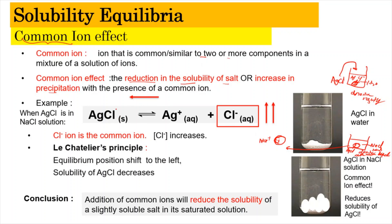As a result, the solubility of AgCl decreases — it becomes difficult to dissolve into ions, and the direction of equilibrium shifts to the left, increasing the precipitation of AgCl. This situation is only happening inside the NaCl solution which has the common ion Cl⁻, coming from the AgCl. When there is a lot of Cl⁻, it shifts the equilibrium position to the left and reduces the solubility. In conclusion, the addition of a common ion will reduce the solubility of a slightly soluble salt in its saturated solution.